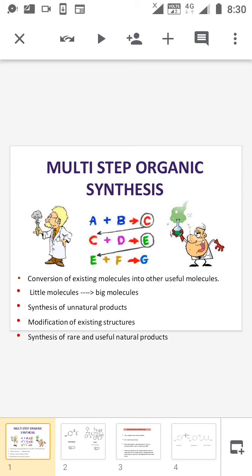What is the role of the multi-step synthesis? What is the application? The application is that multi-step synthesis is used for the conversion of existing molecules into other useful molecules like drugs, polymers and dyes. We can convert small molecules into large molecules, synthesize synthetic products from available products, modify existing structures, and synthesize rare and useful natural products.